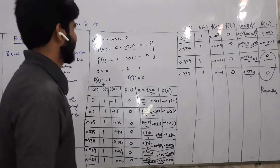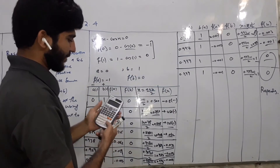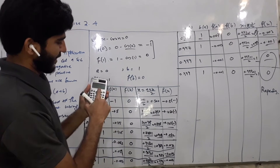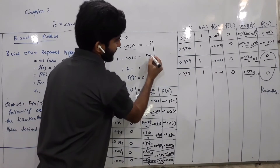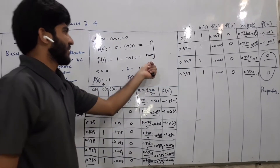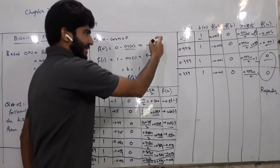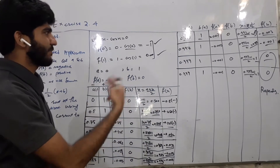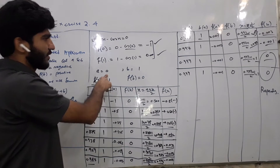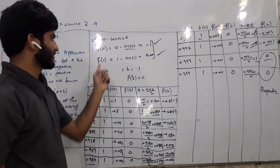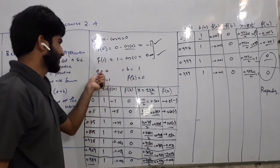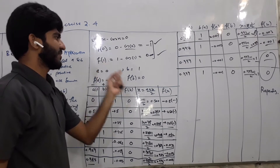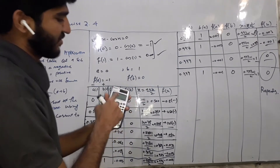اس کو solve کر رہے ہیں: 1 minus cos(1) ہمارے پاس 0.000 آ رہا ہے. تو f(0) = minus 1 ہے، یعنی negative، اور f(1) = 0.000 ہے، یعنی positive. تو condition پوری ہو گئی. ہم نے a = 0 لیا اور b = 1. Function of a put کیا تو minus 1 آیا، اور function of b put کیا تو 0 آیا.